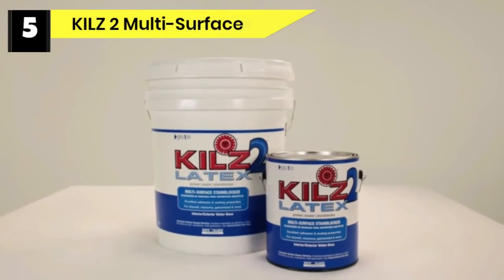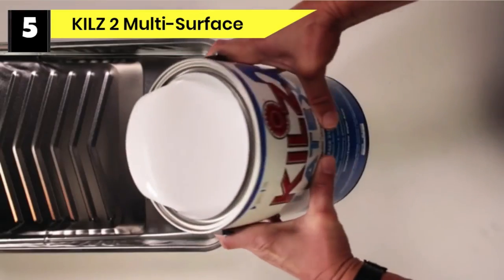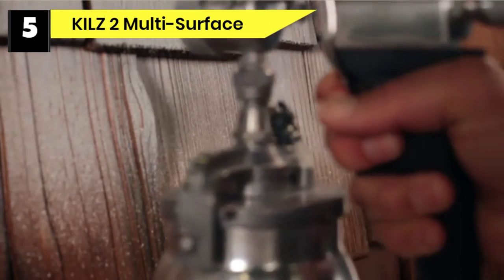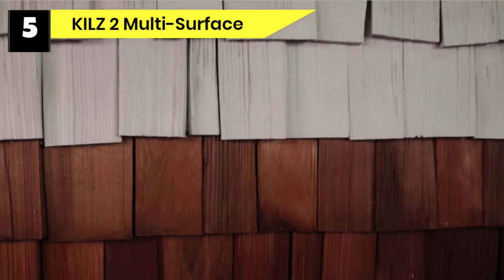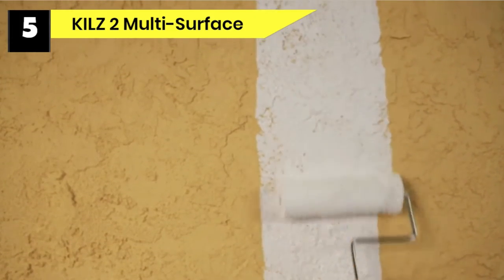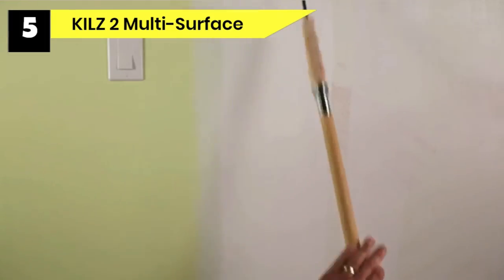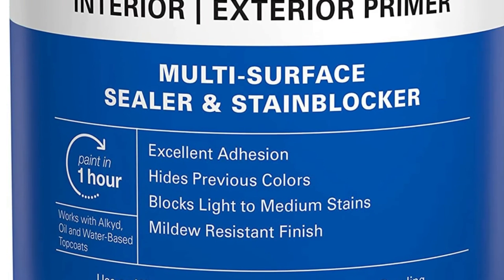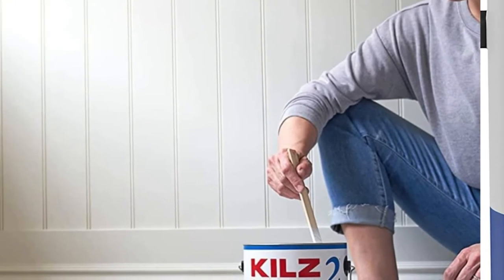Number 5: KILZ 2 Multi-Surface Exterior Primer Paint. In high humidity areas, exterior surfaces like wood need something to keep the mold and mildew away. Thanks to its mildew-resistant film, the KILZ All-Purpose can make sure the wood withstands harsh weather. Unlike the Zinsser Cover Stain or the INSLX Prime Lock, this product does not have a strong odor. It also dries very fast, which means that you can follow up with the paint in as little as 30 minutes.